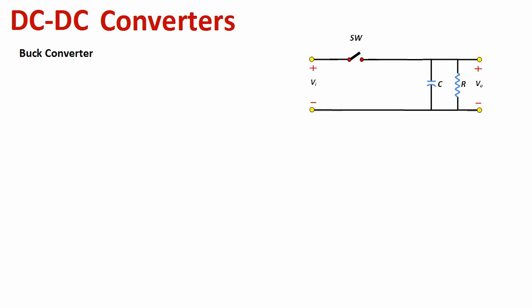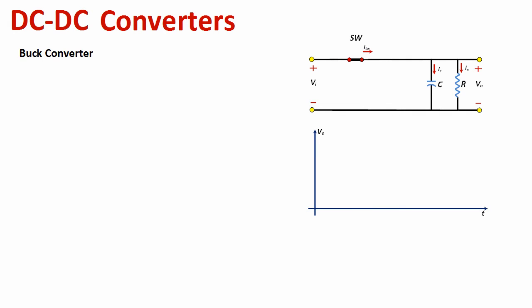We start by saying that the switch is closed — we have sent a pulse to the gate and that made the switch close. By doing that, the voltage at the output is the same as the voltage at the input. If we plot the curve for what happened so far, we can say that V_out is basically equal to Vi.